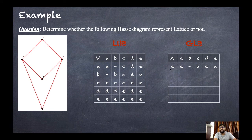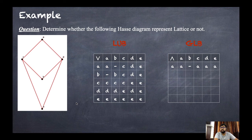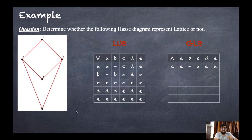Now the GLB table. GLB of a and a is a. For a and b: we need a lower bound that relates to both a and b, but there are no such elements, so GLB of a and b is dash (null). For a and c it is a. Since a is the lower bound of the whole graph, all entries in the a row are a.